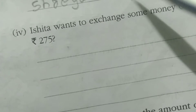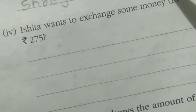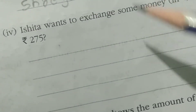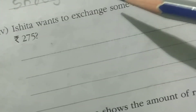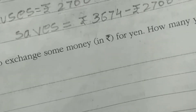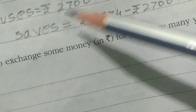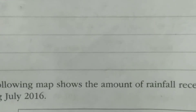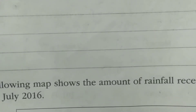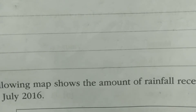Shreya receives rupees 3,674. She uses rupees 2,700 every month, so Shreya saves equals 3,674 minus 2,700. The answer is rupees 974.